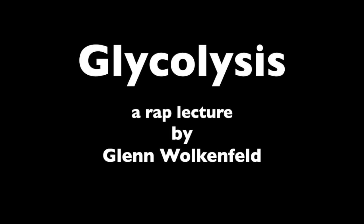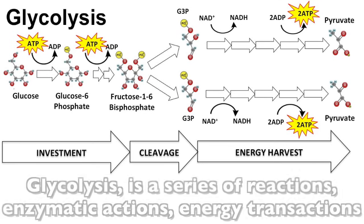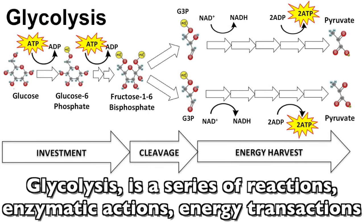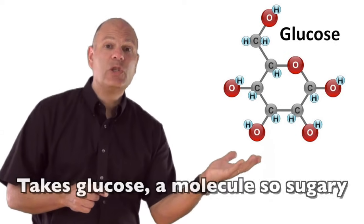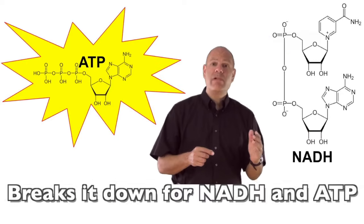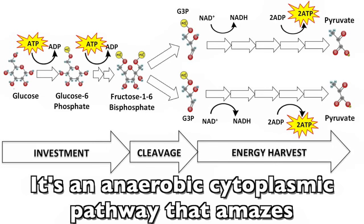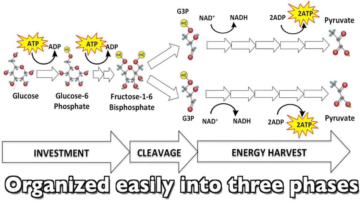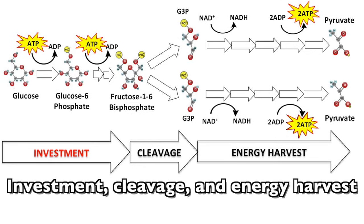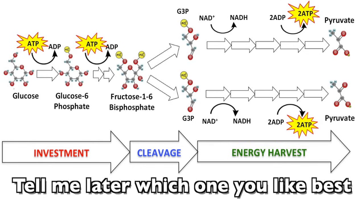Hey sugar, come on over here, sweetie. Let's break it down. Glycolysis is a series of reactions, enzymatic actions, energy transactions. Takes glucose molecules so sugary, breaks it down for NADH and ATP. It's an anaerobic cytoplasmic pathway that amazes. Organized easily into three phases: investment, cleavage, and energy harvest.